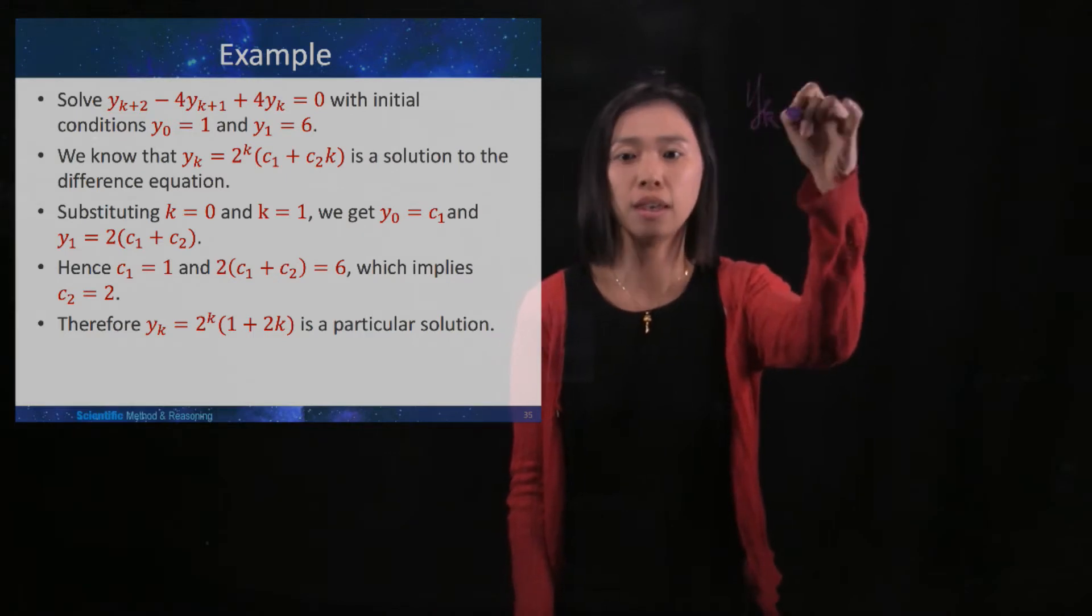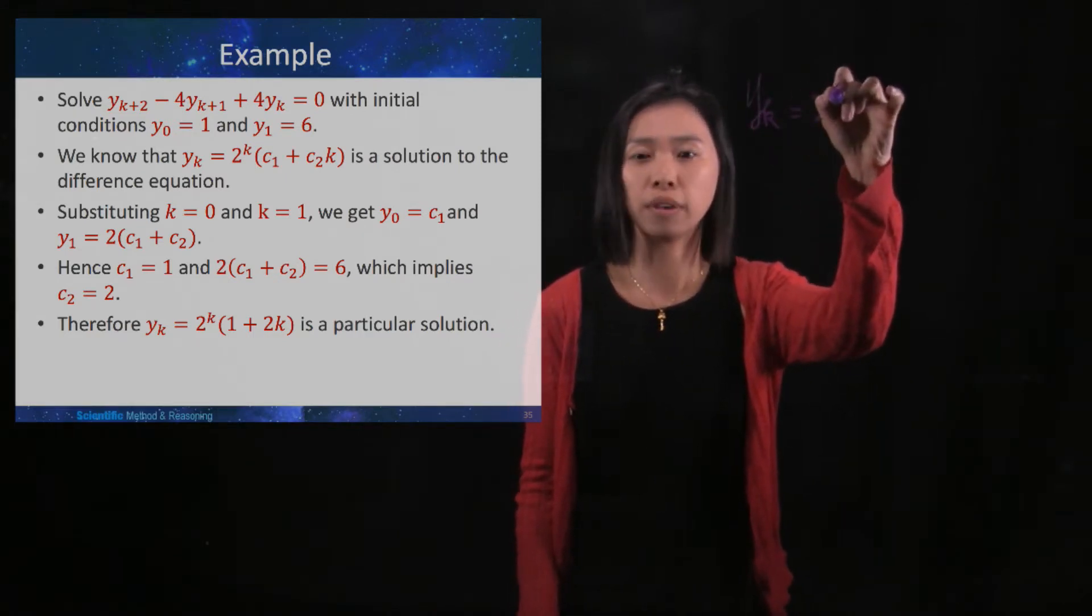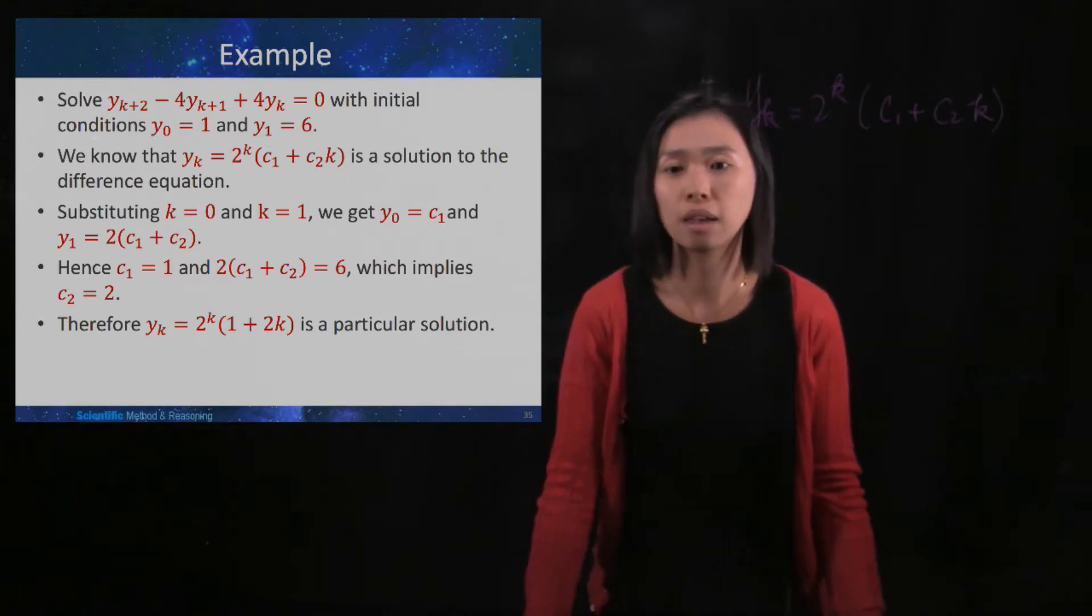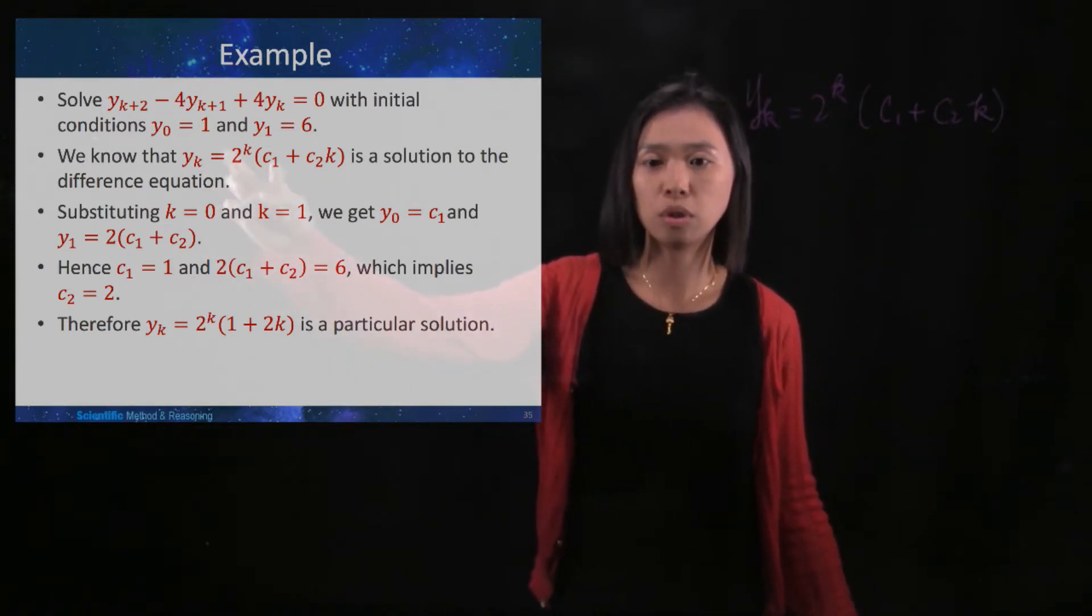So we have y_k equal to 2^k times (c_1 + c_2 times k). The question has given two initial conditions.